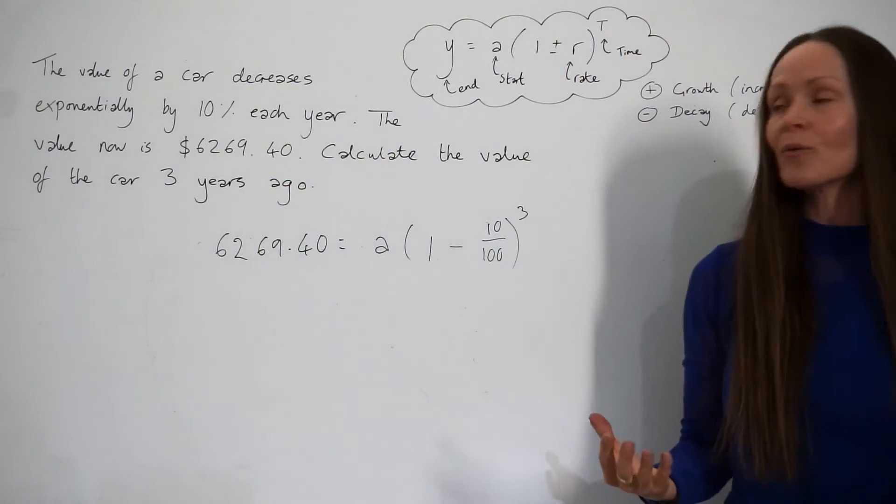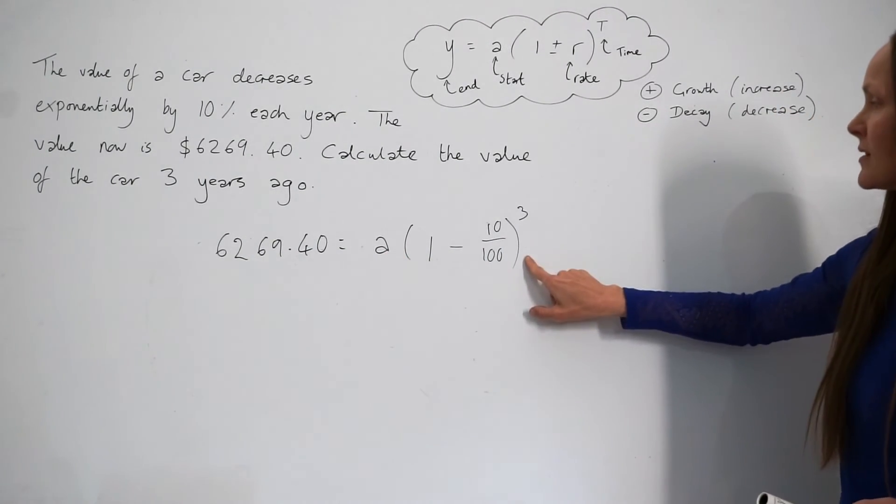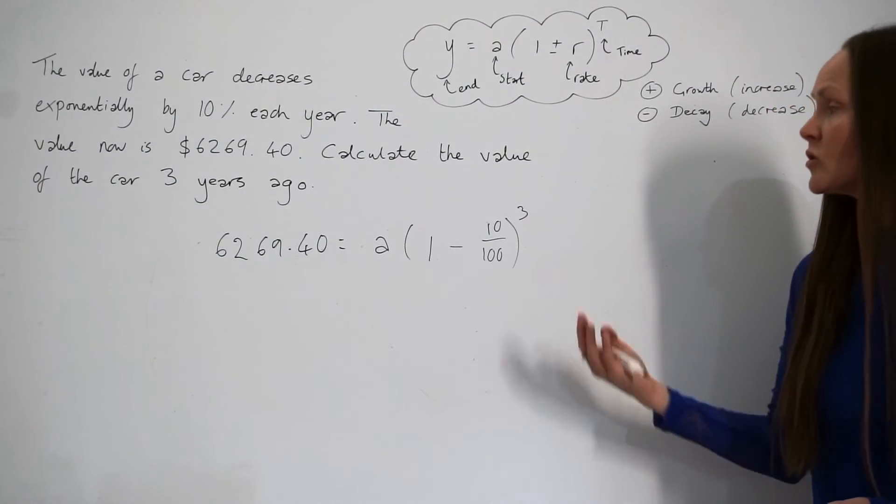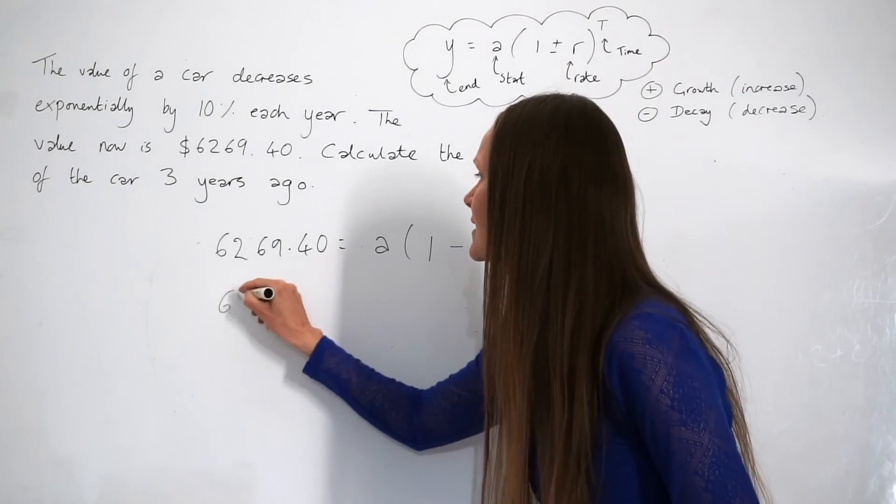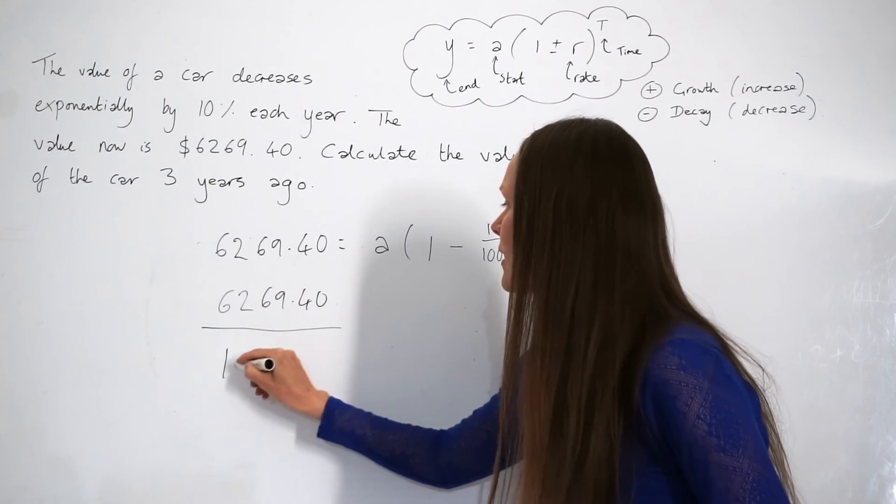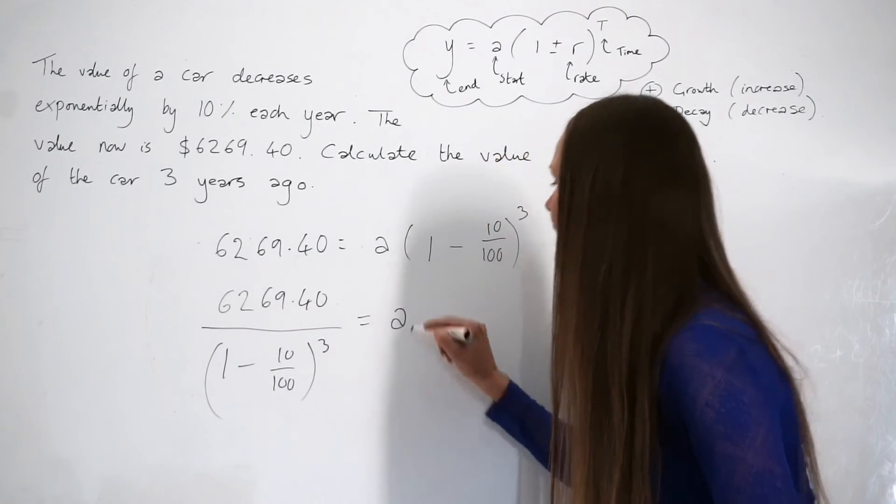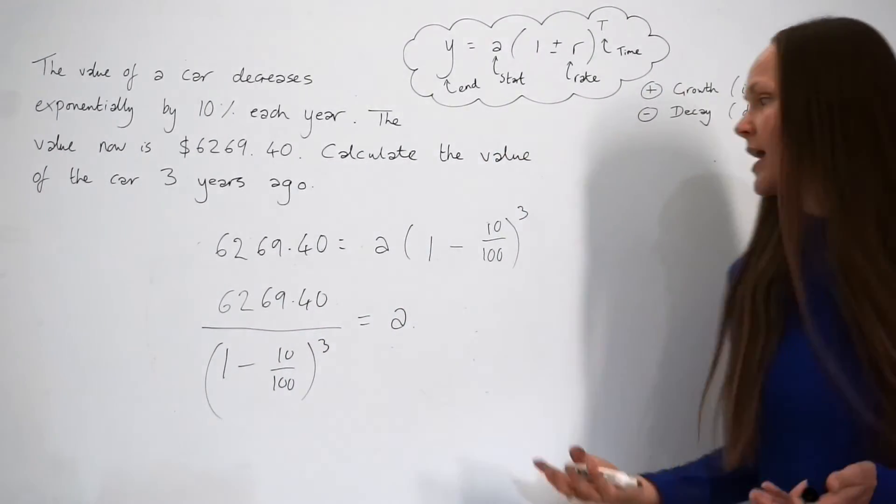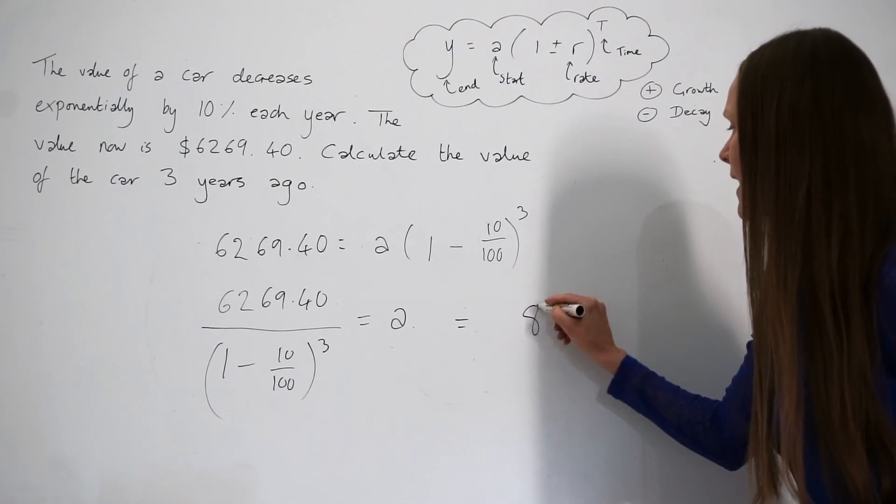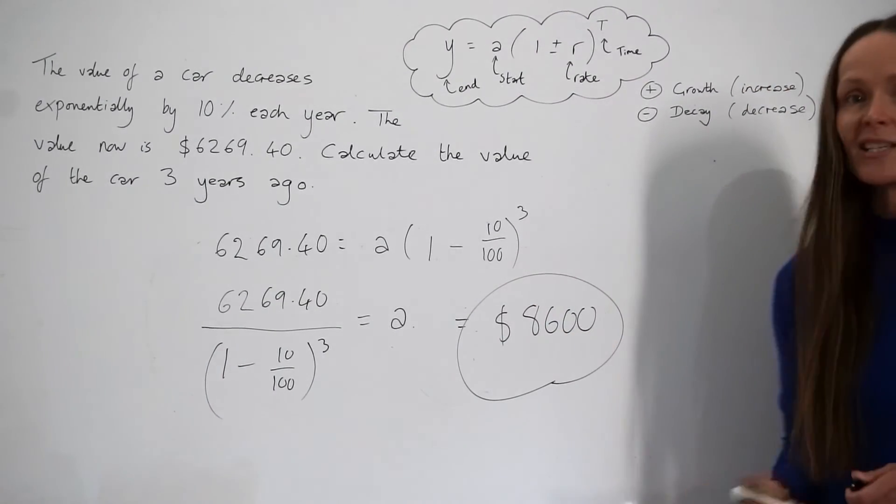So in this question, we have to solve the equation for a. a is being multiplied by all of this. So we have to divide, that's the opposite of multiplying, in order to solve and find a. So we have to divide 6,269.40 by 1 minus 10 out of 100, raised to the power of 3. And by doing that, we're working out the value of a. So when you put this into the calculator, you should find that you get 8,600. So that is the value of the car 3 years ago.